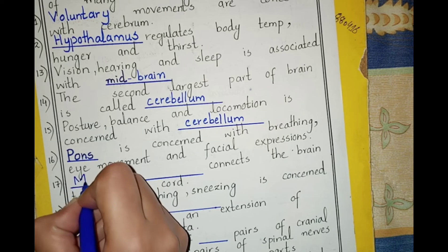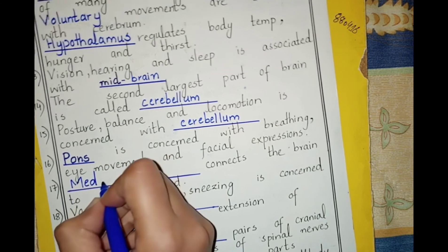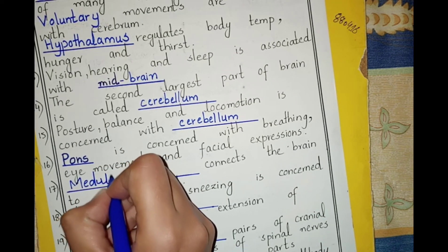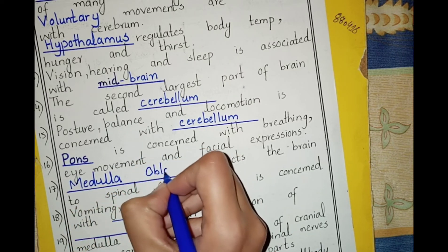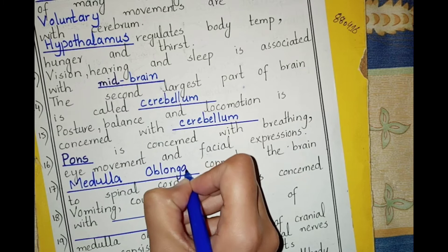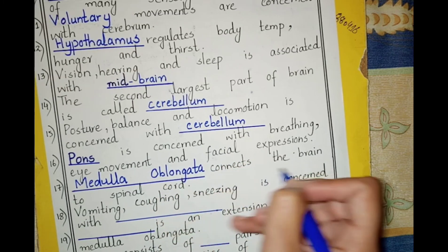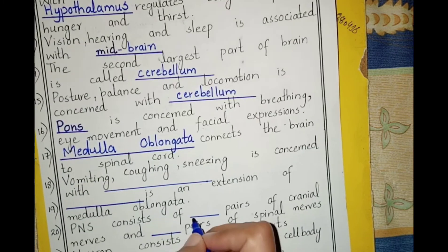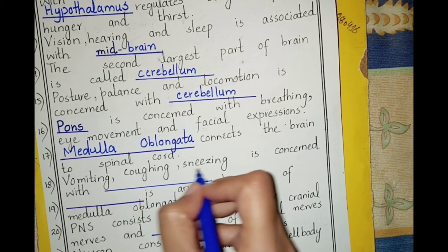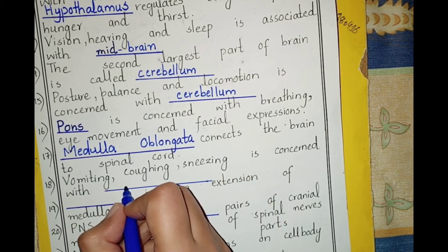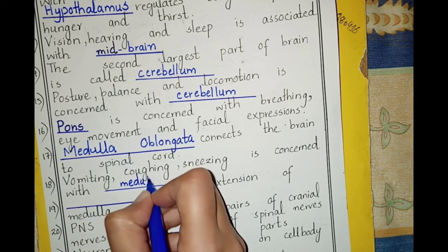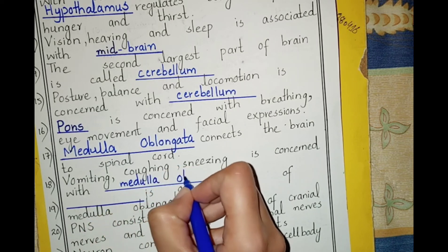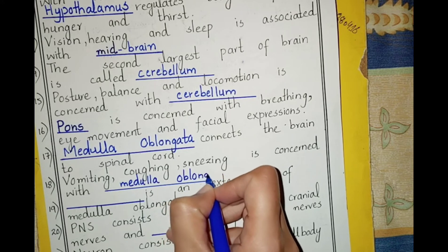Medulla oblongata connects the brain to the spinal cord. Vomiting, coughing, and sneezing are all concerned with the medulla oblongata.